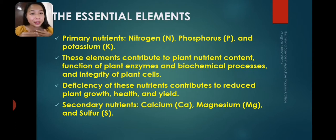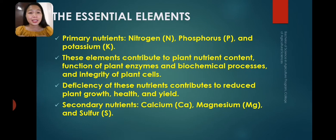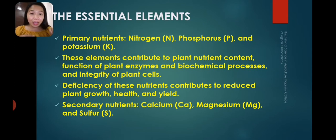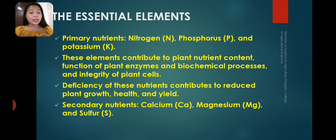These primary nutrients contribute to plant nutrient content, function of plant enzymes and biochemical processes, and integrity of plant cells. Deficiency of these nutrients leads to reduced plant growth, health, and yield. The secondary macronutrients are calcium, magnesium, and sulfur.